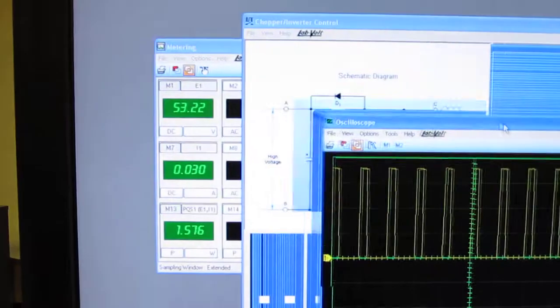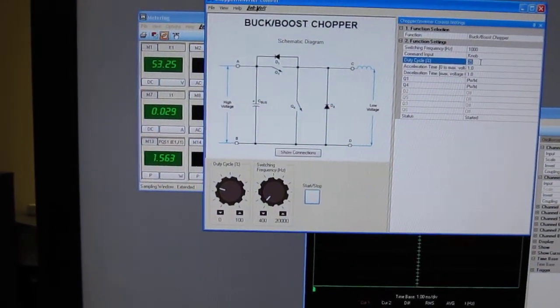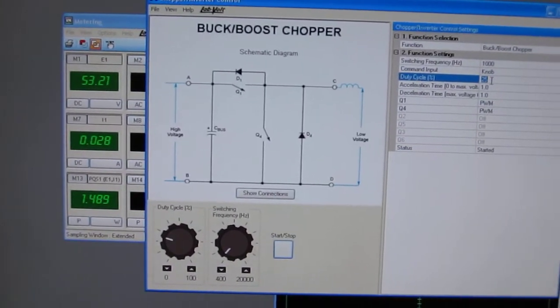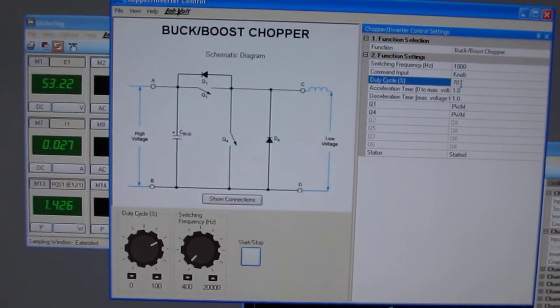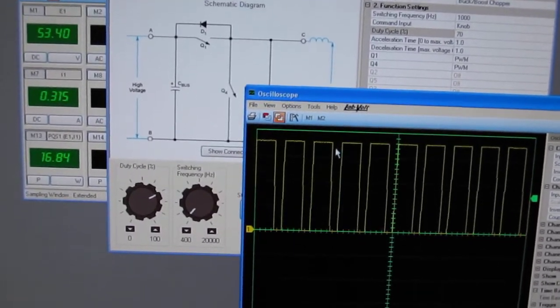Let me move that here. I go to a duty cycle that would be, let's say 70%. See here that it increased to 70%.